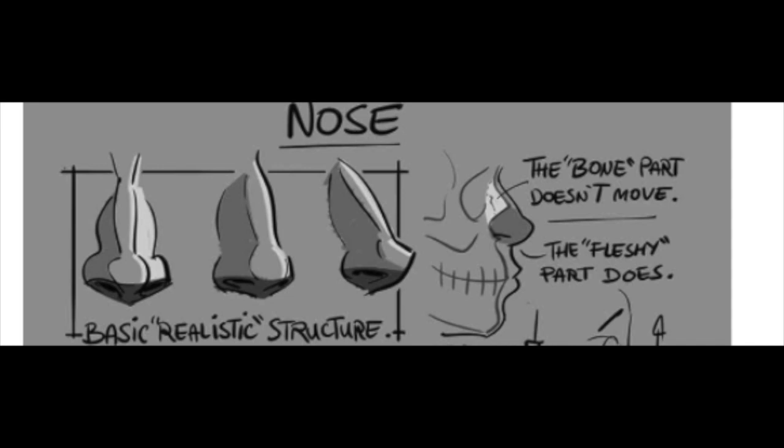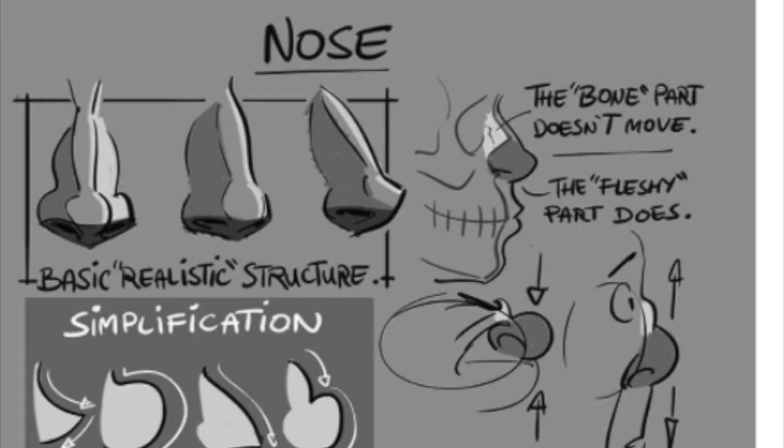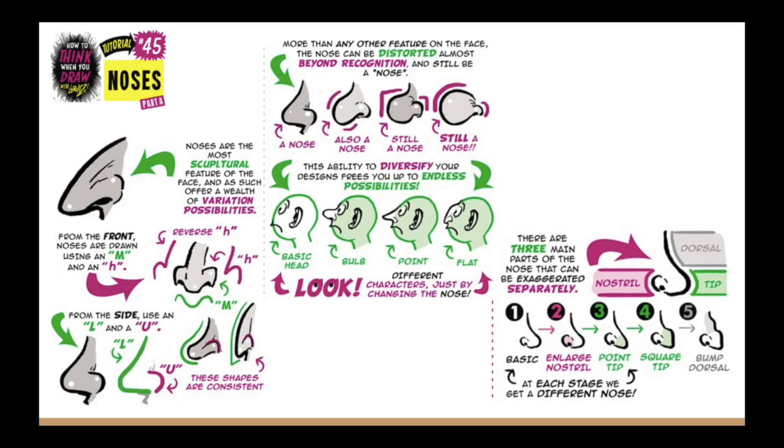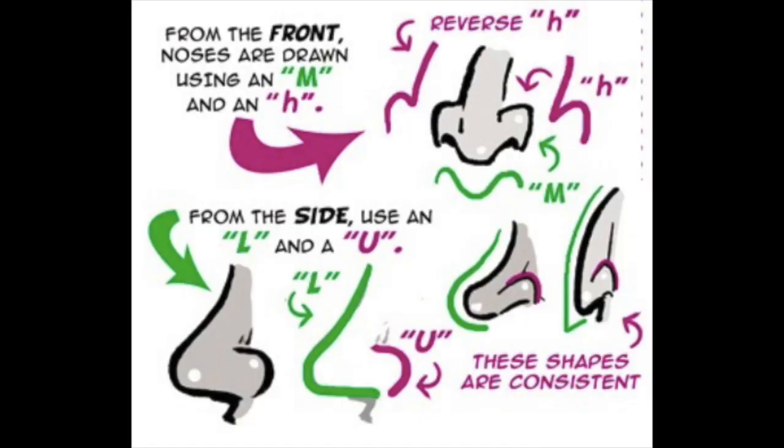Here we see part of the nose is bone in the back and the front part of the nose is cartilage, which is more pliable than bone. The cartilage part barely moves, but it can move a little bit in extreme expressions. The Etherington brothers here mentioned that from the front you can think of the nose as being an M shape along the bottom of it and two lowercase h's to be the sides of the nose.